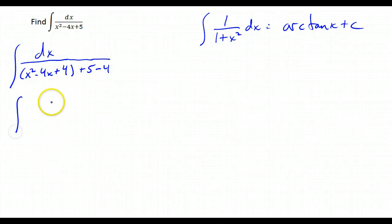So this becomes dx over x minus 2 squared plus 1, which is in this form right here, except instead of an x, I have an x minus 2.